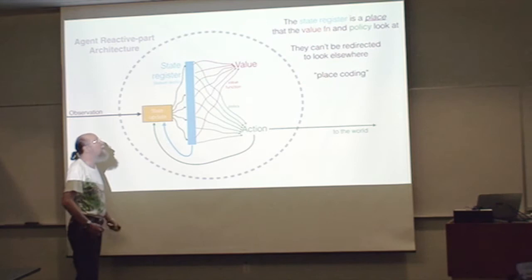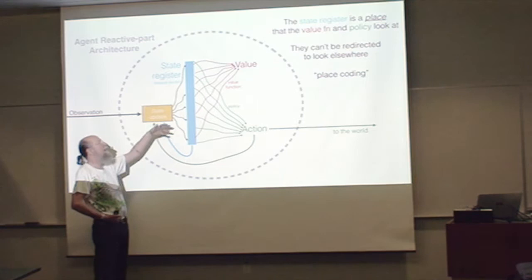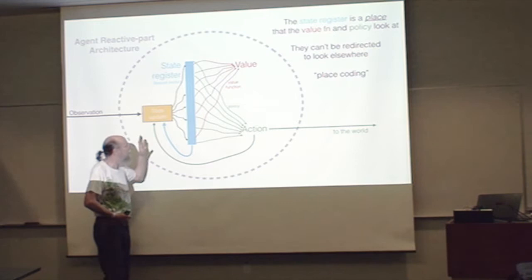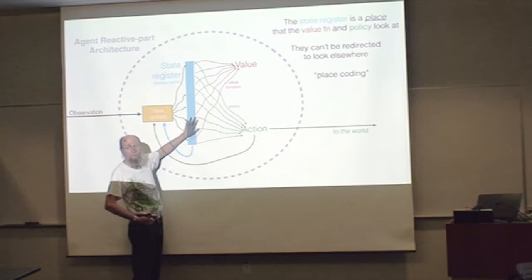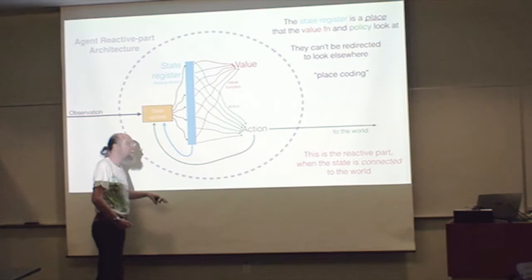There's a place where your state is. You can't do what we do with our algorithms or equations where you have a value function and can apply it to this state or some other state. Here, it's more like a machine. If I want to apply the value function to a state, I've got to get the state into this register. That will become critical in a moment.